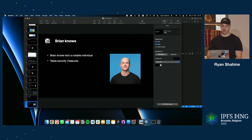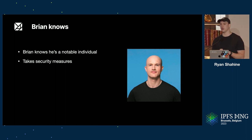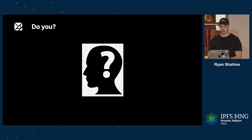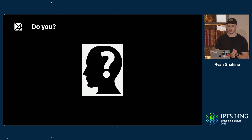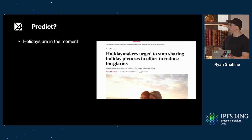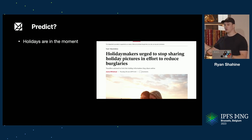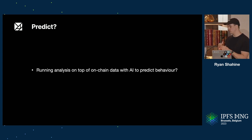Brian knows that he is a notable individual, and Brian knows that he has to take security measures. Because of that, he can be a bit more confident in publicly showing his funds and his ETH balance. But does anyone else who has significant funds and uses POAPs to attend events take the right security measures? We can look at this like: when you're on holiday, don't post photos on social media because burglars can break into your house. We'd say 'okay boomer' to that level of warning. But with Web3 and AI and GPT, we can actually take that a step further.